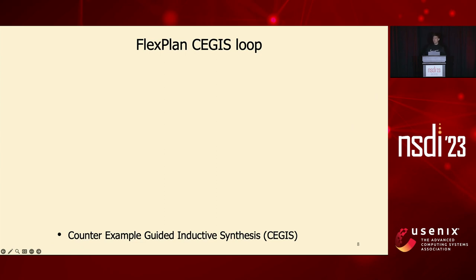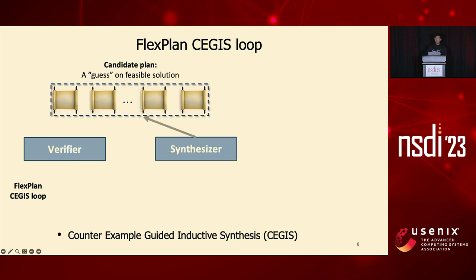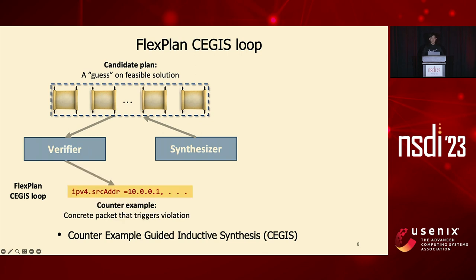Our synthesis paradigm takes the specification and the sequence sketch and invokes CEGIS — counterexample-guided inductive synthesis. The synthesizer generates an initial guess of feasible candidate plans. These are not guaranteed to be correct with respect to consistency guarantees, so the verifier validates their correctness. In the case of failures, the verifier generates counterexamples — in our case, concrete packets that trigger violations — and sends them back to the synthesizer to cut down the search space. This loop ends when the verifier agrees with a candidate plan, or when the synthesizer runs out of options.